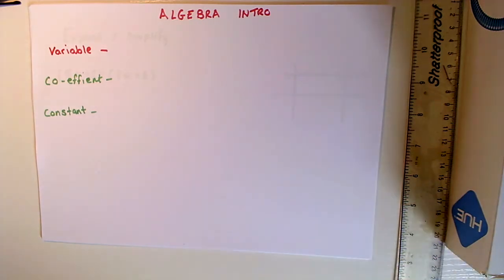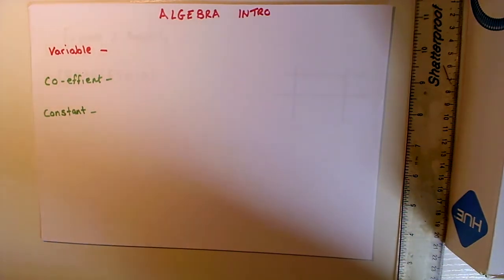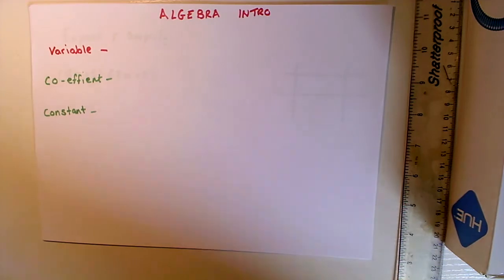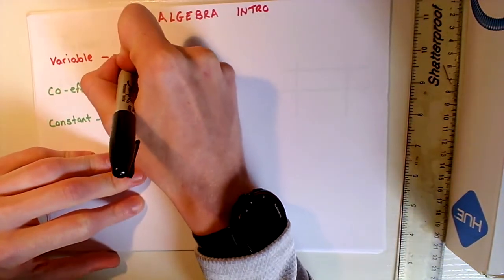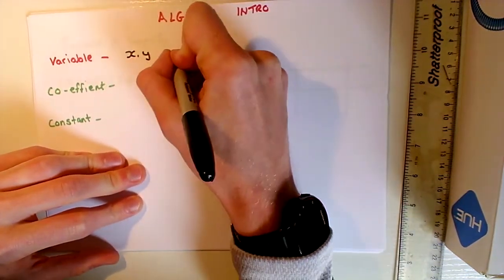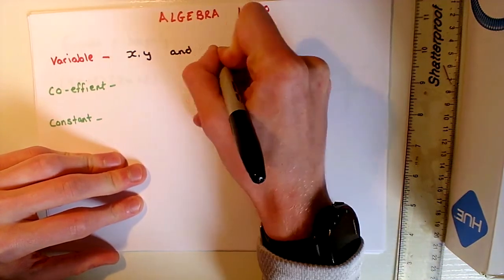First things first, what we need to think about is variables. A lot of this should hopefully be recognizable from your junior cycle, but let's just refresh our memory. A variable is typically represented by a letter, usually X or Y, but it can be any letter. This number may change or it may be unknown, so we'll just say it's X, Y, and unknown.